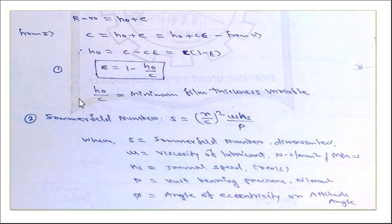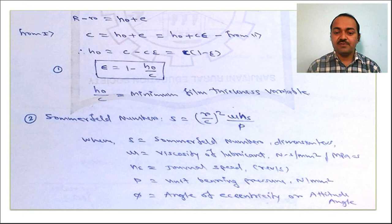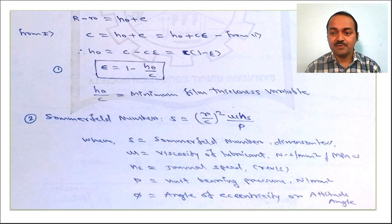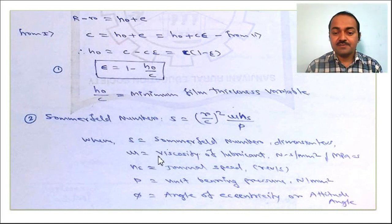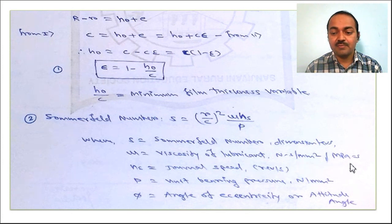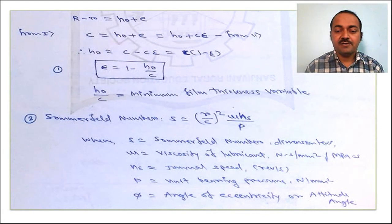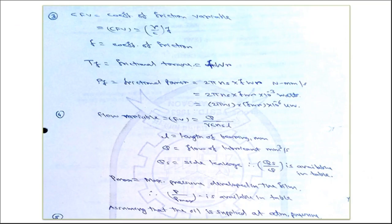The next dimensionless parameter is the Sommerfeld number S, defined as S = (R/C)²·(μ·ns/p), where R/C is the geometry parameter, μ is lubricant viscosity in N·s/mm² (MPa·s), ns is journal speed in revolutions per second, p is the unit bearing pressure in N/mm², and φ is the attitude angle (angle of eccentricity). The coefficient of friction variable is defined as (R/C)·f, where f is the coefficient of friction.